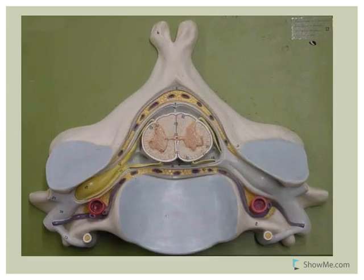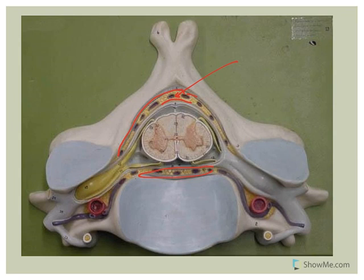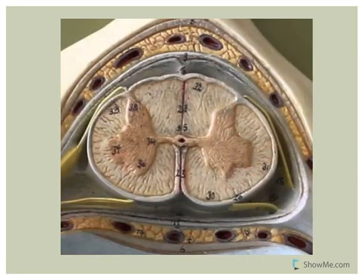On a lab model, you can see the same structures. The yellow material is the adipose tissue, and you can also see the blood vessels — that region represents the epidural space. I'm going to zoom in so you can see a bit better, and I'll highlight the structures in different colors.